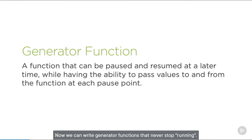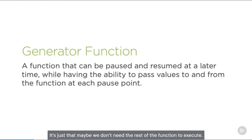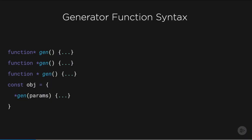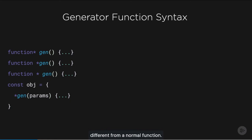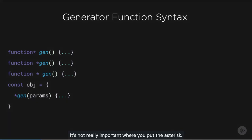Now we can write generator functions that never stop running — in quotes because it's not like a generator function is stuck in an infinite loop. It's just that maybe we don't need the rest of the function to execute. The syntax of a generator function isn't all that different from a normal function. We just need to add an asterisk somewhere in between the function keyword and the name of the function.